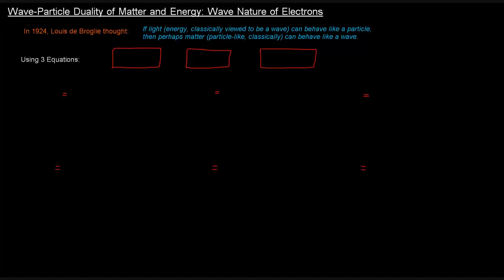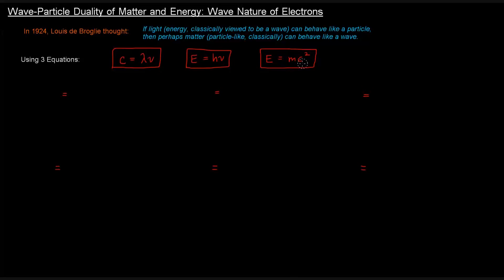So, using three equations, we're going to figure this out. We're going to use C equals lambda nu — speed of light equals wavelength times frequency — and then energy equals Planck's constant times the frequency, and E equals mc squared, Einstein's famous equation relating energy to mass and the speed of light squared.